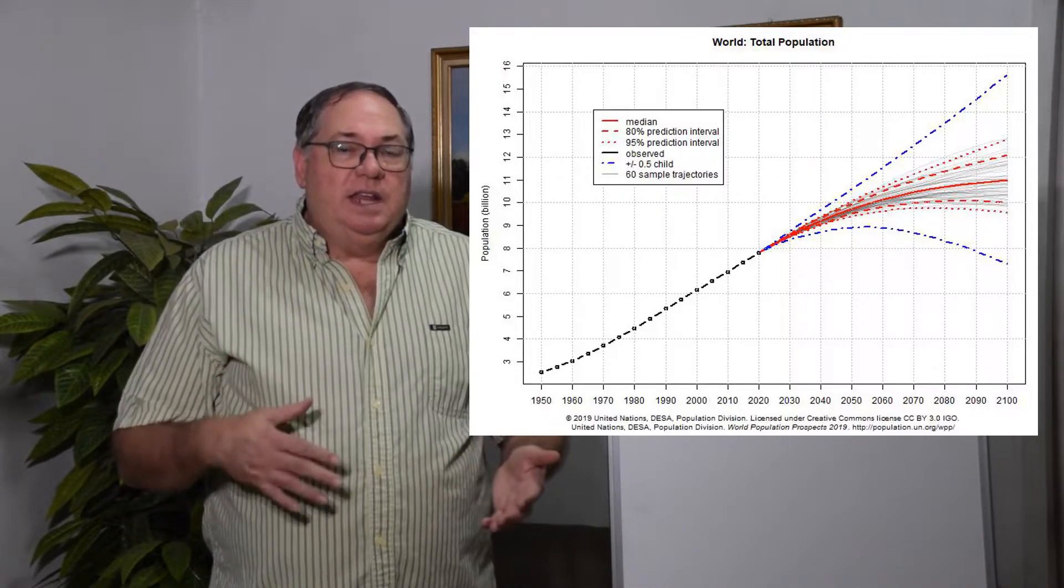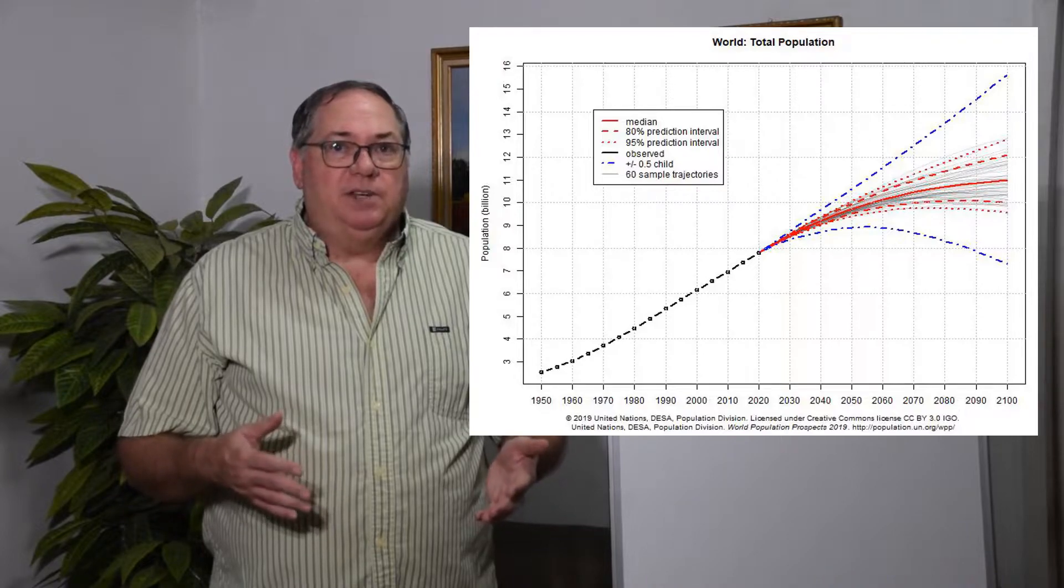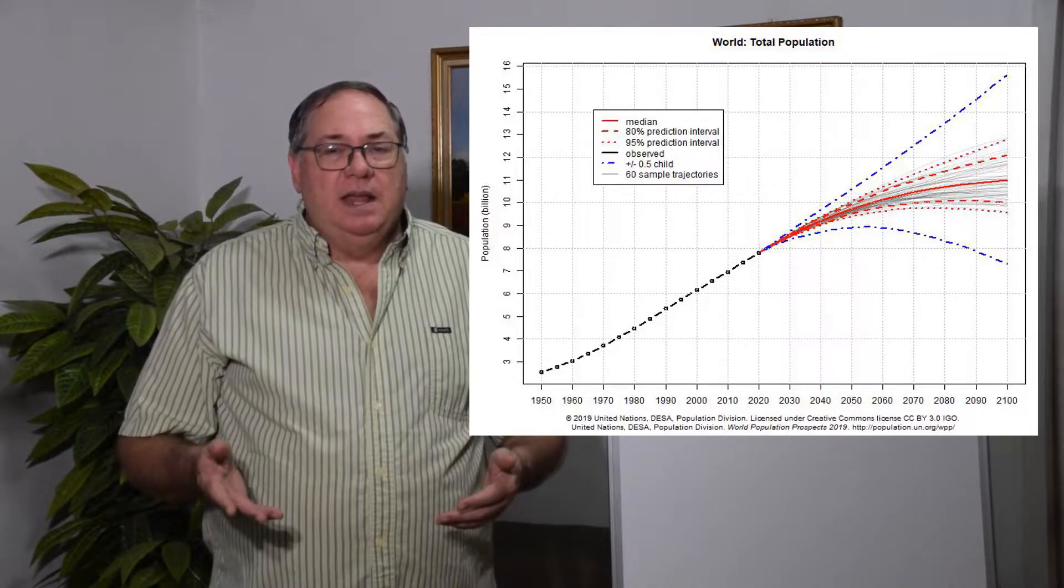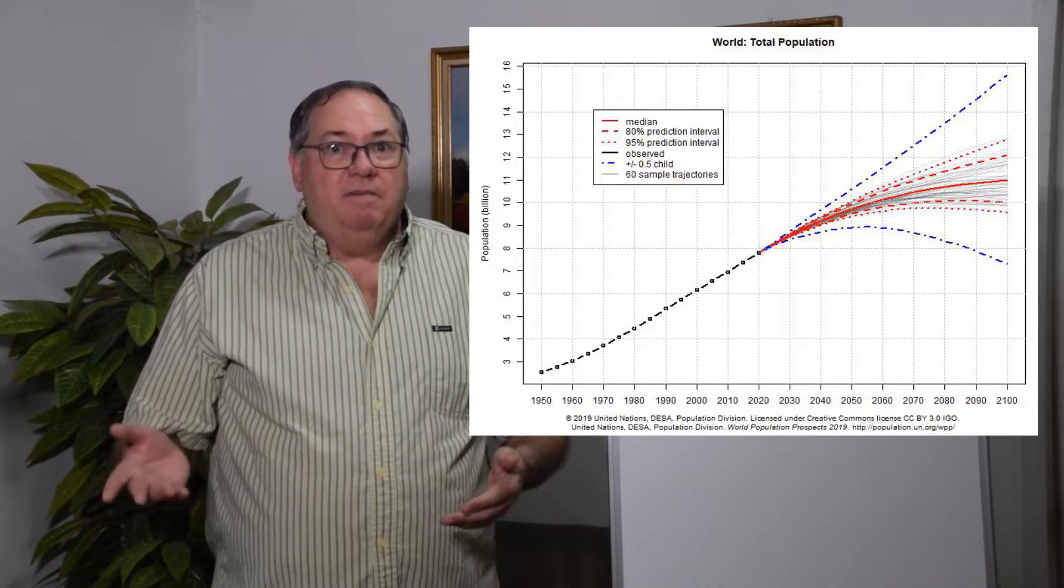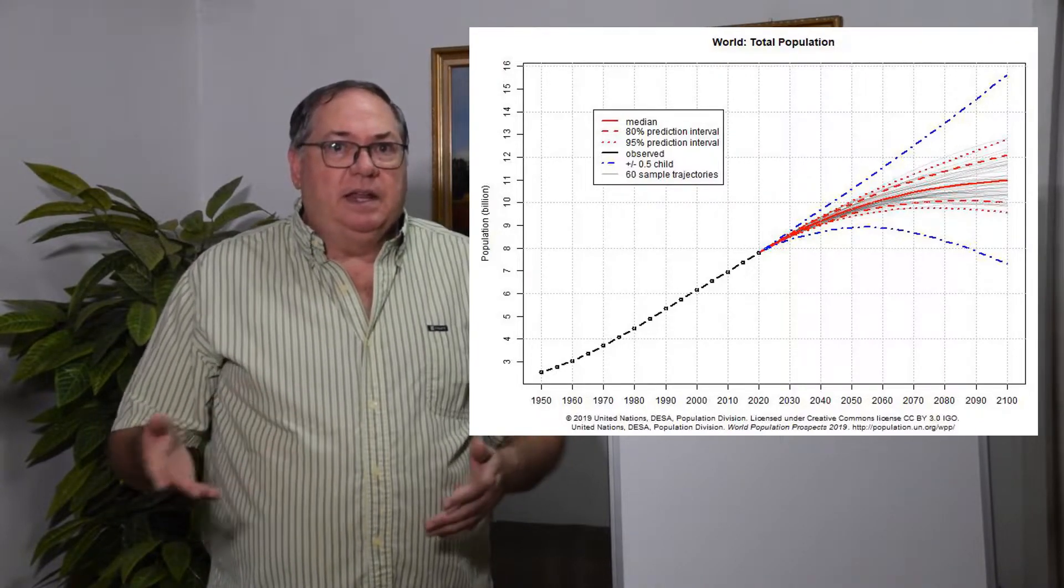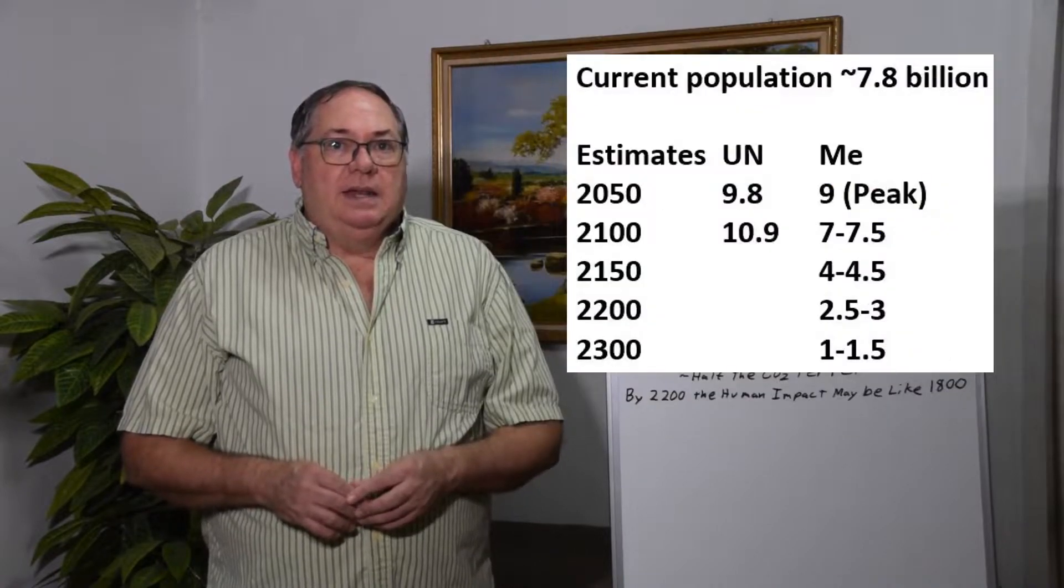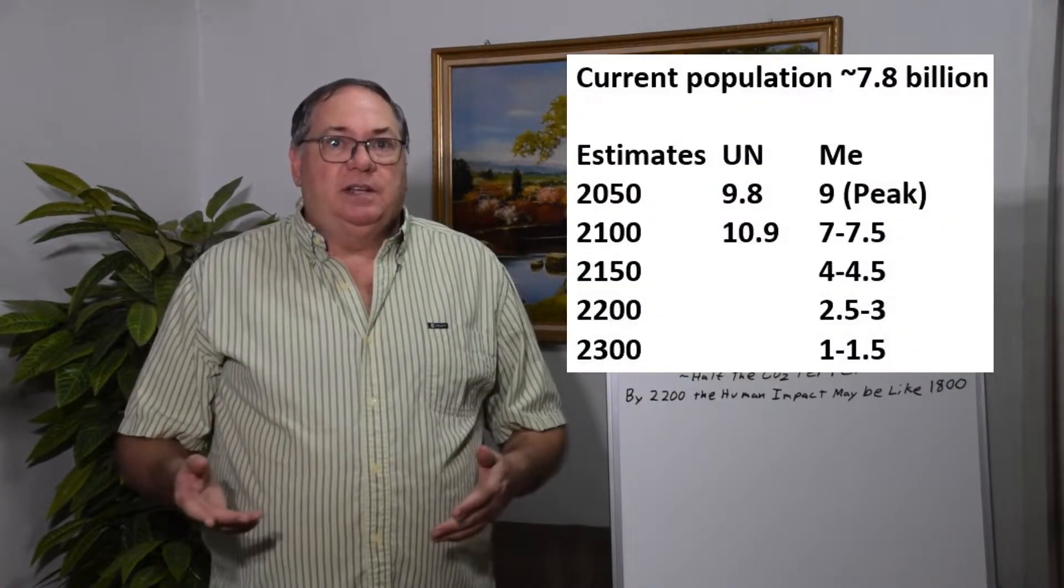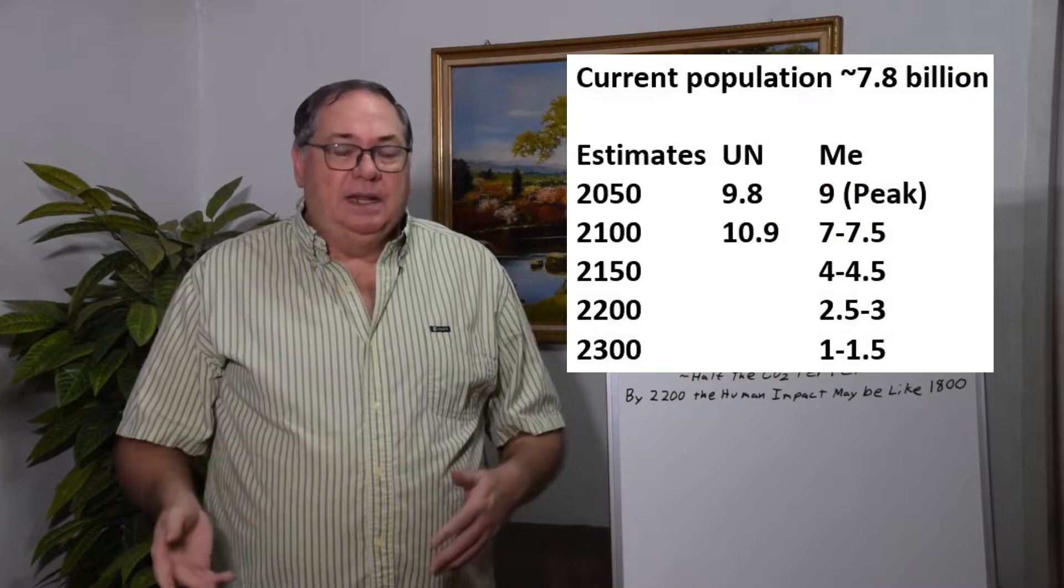Generally, if you look at the individual countries, the population growth tends to follow the 80th percentile or 85th percentile line, so significantly below what they predict. And it's generally because fertility rates are falling more rapidly than they predict.